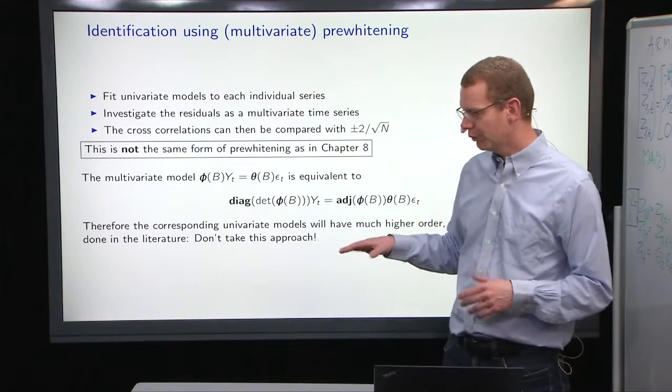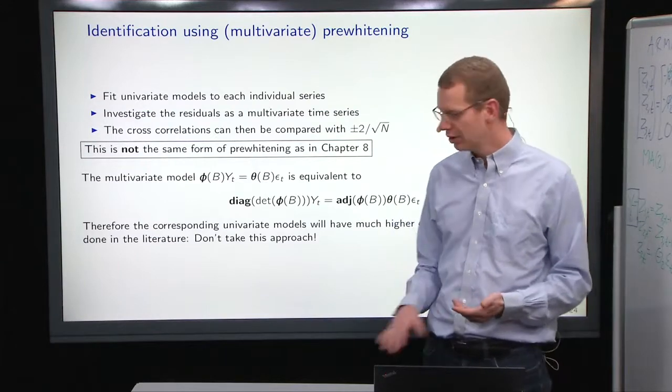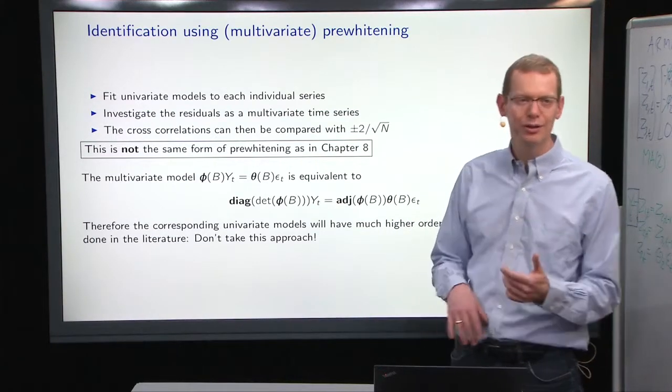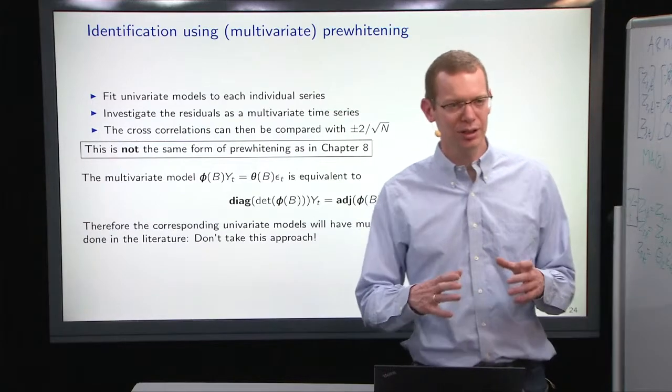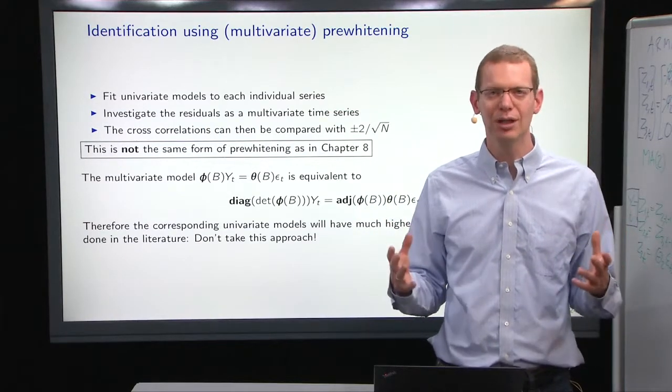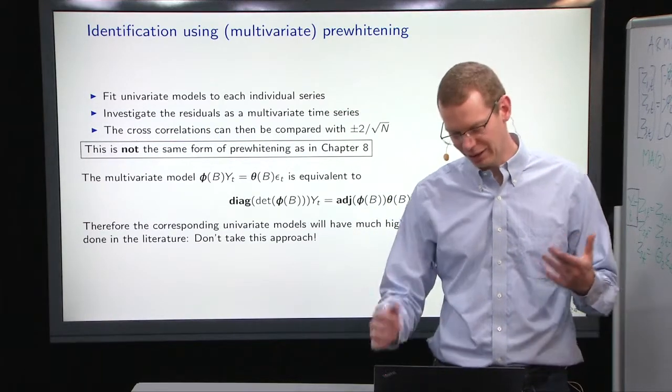And then you have the aggregate of your phi multiplied on your theta. That could be your estimate of how the noise structure is. Basically what I'm saying is if you do this, you would end up having a model with a much higher order. So even though it's often done or suggested in literature, I would say don't do this. Do it step by step, modeling in a multivariate model, look at what is left and take it from there.